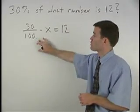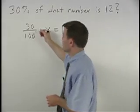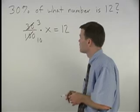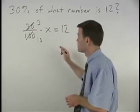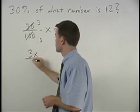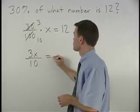Notice that 30 over 100 can be reduced to 3 over 10. So rewriting our problem, we have 3x over 10 equals 12.